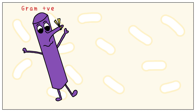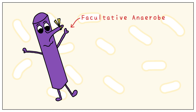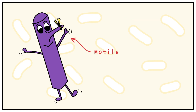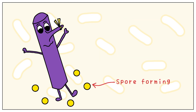Bacillus cereus is a gram-positive organism. It takes on the purple stain when observed under a microscope. It is a rod-shaped bacilli and is a facultative anaerobic, which is easy to remember by the clip on his nose. It is motile and is a spore-forming organism.